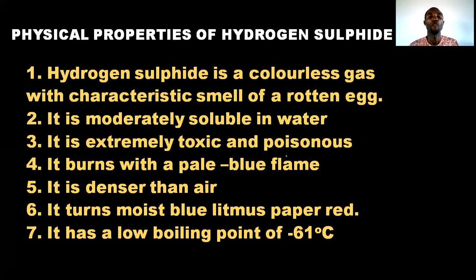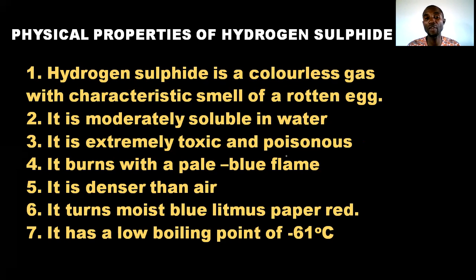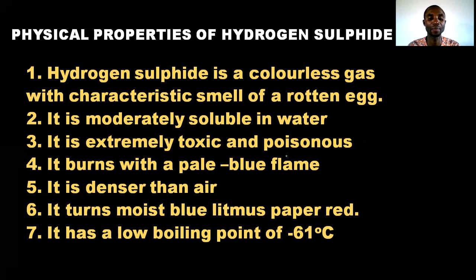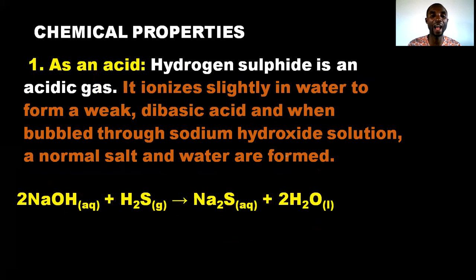The physical properties of hydrogen sulfide: it is a colorless gas with the characteristic smell of a rotting egg. It is moderately soluble in water. It is extremely toxic and poisonous, which is why we prepare it in the fume cupboard. It burns with a pale blue flame and is denser than air. It turns moist blue litmus paper red and has a low boiling point of minus 61 degrees Celsius.